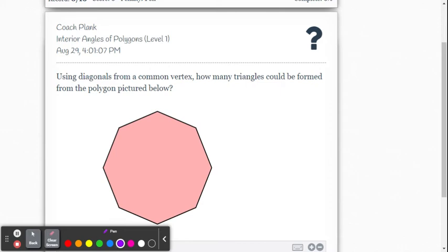We're going to look at a few examples for interior angles of a polygon level one within the DeltaMath system.